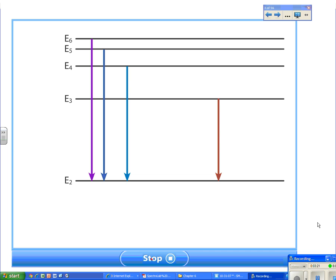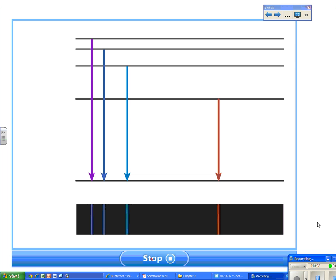Transitions that end at level 3 or higher produce infrared light. Transitions that end at level 1 produce ultraviolet light. The hydrogen spectrum is given by these four transitions to level 2. Out of the many wavelengths emitted, only those shown here are visible.